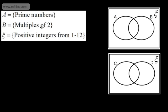Set B are the multiples of 2. We use the notation here for the universal set. If we look at the Venn diagram, the universal set is everything that sits inside this rectangle. Set A is here and set B is just here. What we're going to do is use the Venn diagram to fill in the information given here in set notation.